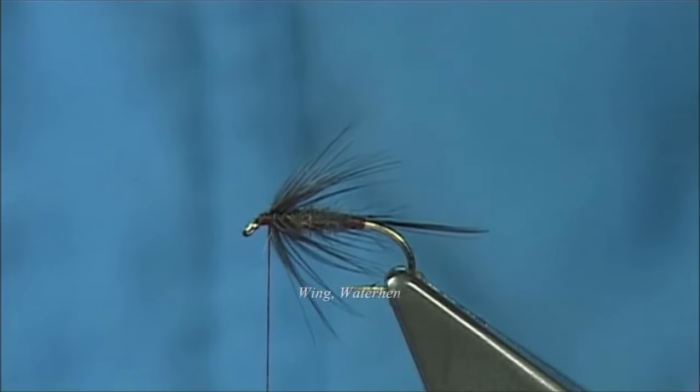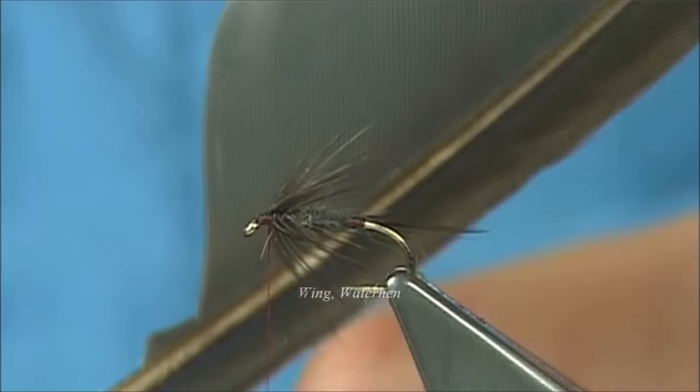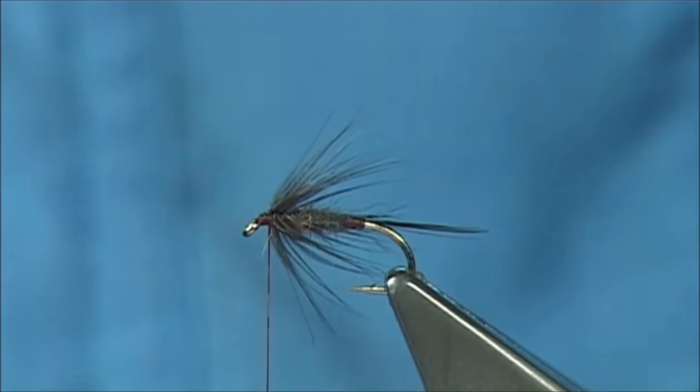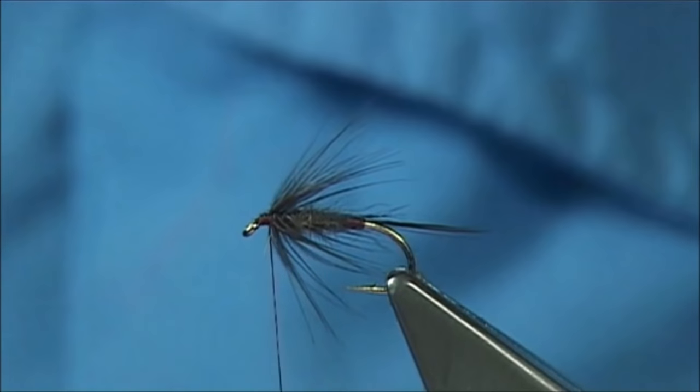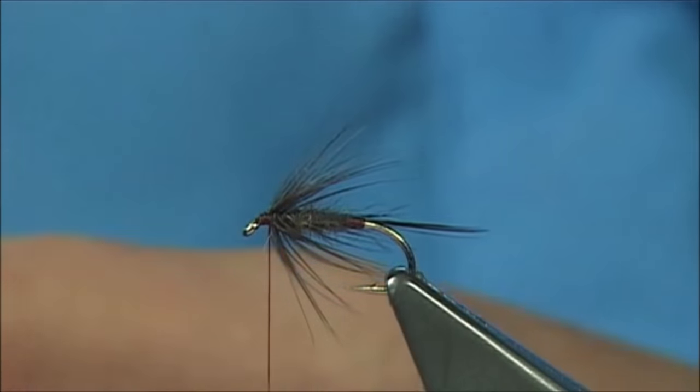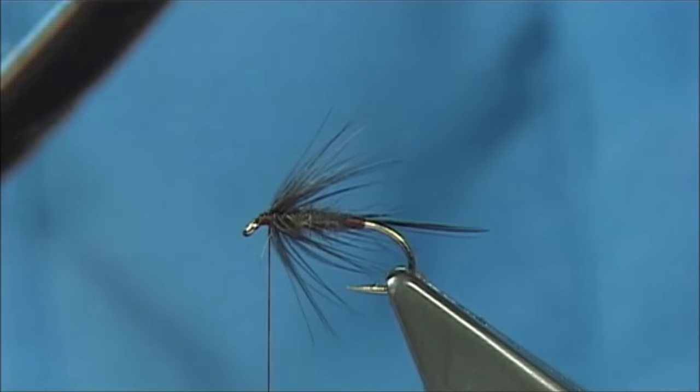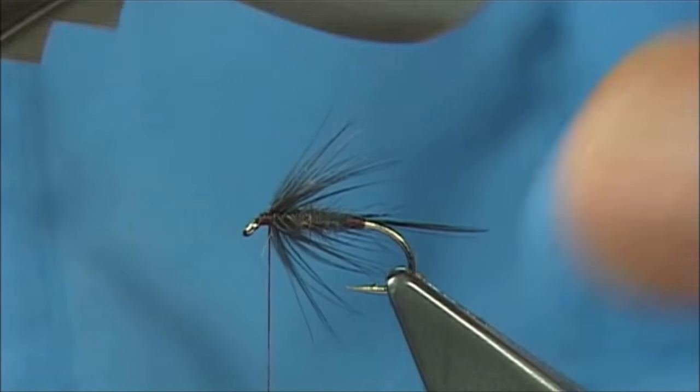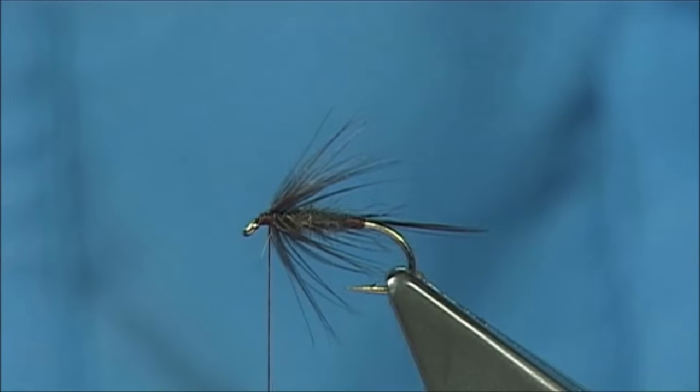Now we're going to tie in our wing. Now the wing is water hen, these are the primary feathers. Basically we need a right and a left side. So I'm taking a small slip from the right and one from the left. Now you want the inside of these feathers, meaning that it's basically the front, but you want the front to be the inside of the wing and obviously the other side to be the outside. It's just the way the curve, the natural curve of the feather and the color is nice.